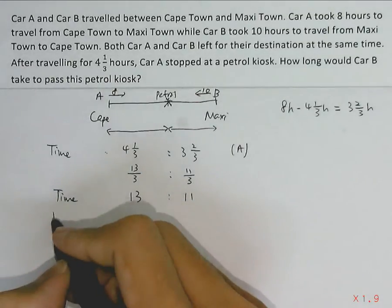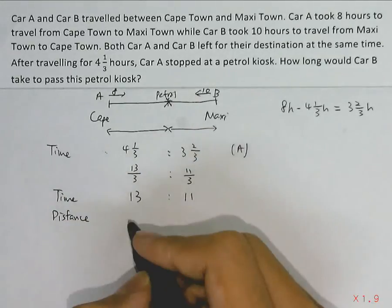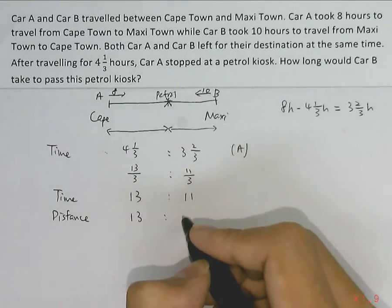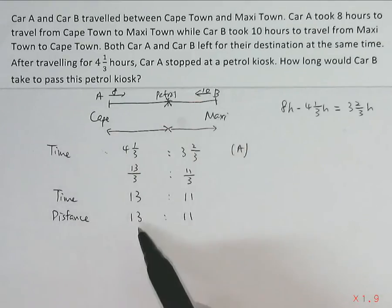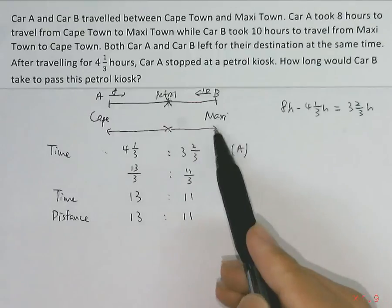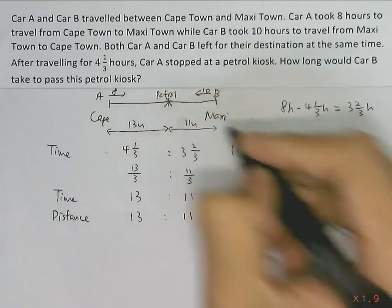Now we know that time ratio is the same as distance ratio. So distance ratio will also be 13 to 11. From Cape Town to petrol kiosk will be 13, and from the petrol kiosk to Maxi Town will be 11. So I'll write down here, 13 units and 11 units.